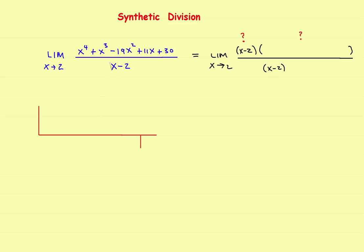Since you have x minus two, put a positive two on the outside. The coefficients from the numerator are one, one, negative 19, eleven, and thirty. Bring the first one down. Two times one is two — add to get three. Two times three is six — add to get negative thirteen. Two times negative thirteen is negative twenty-six — add to get negative fifteen. Two times negative fifteen is negative thirty — add those together, and you wind up with zero.